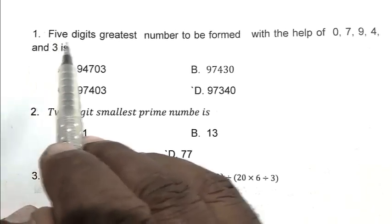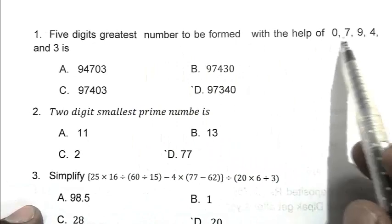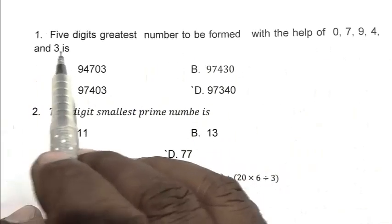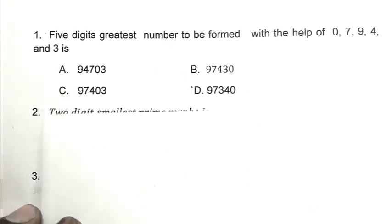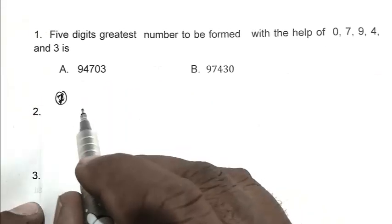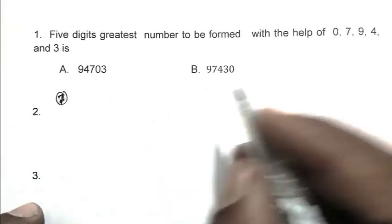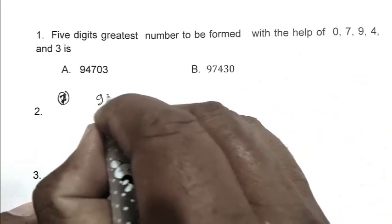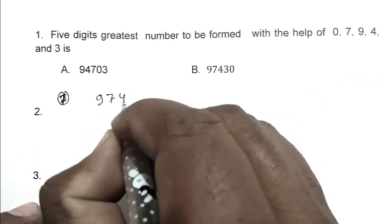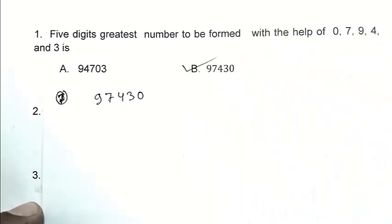Question number 1. The 5-digit greatest number to be formed with the help of 0, 7, 9, 4 and 3. So friend, we have to calculate the greatest number from greatest to smallest digit. So first 9, after that 7, after that 4, after that 3, then 0. So B is the right answer.